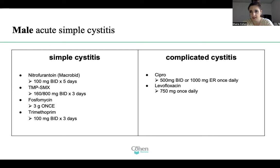If it's complicated — if it has systemic symptoms — then use Cipro, your big guns, or levofloxacin. This also applies to females: if you're treating a complicated cystitis, you use your big guns — Cipro or levofloxacin.